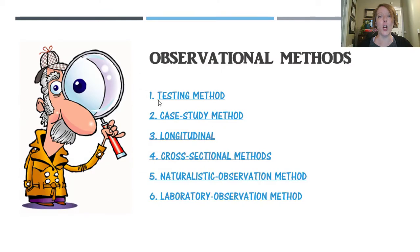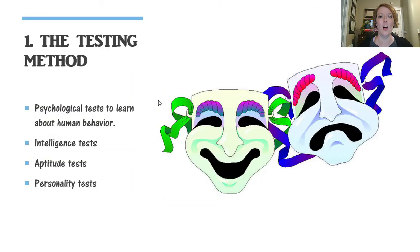First we want to talk about the different methods of observation. It isn't just looking at something — there are actual ways of doing them. There are six and we're going to be going into each in a little bit more detail. The first observational method is the testing method, where we look at different psychological tests to learn about human behavior. These could be a variety of different types of tests like intelligence tests, aptitude tests, and personality tests.